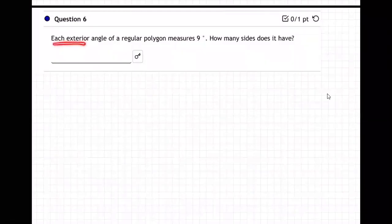So number six, each exterior angle of a regular polygon is nine degrees. How many sides does it have?